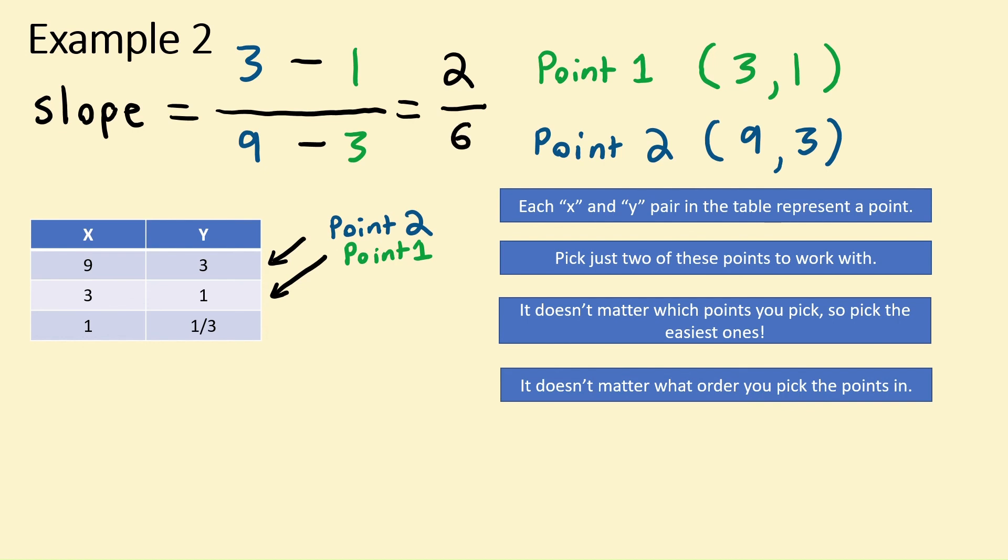Now it looks like 2 over 6 can be simplified, so let's work on that. First, let's move things over a bit to give ourselves some room. Now we know that 2 and 6 can both be divided by 2, so let's do just that.